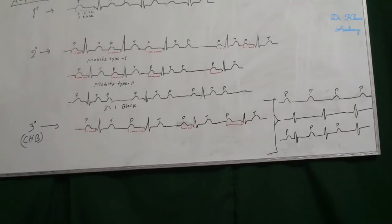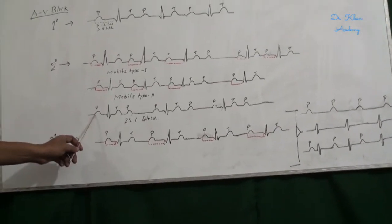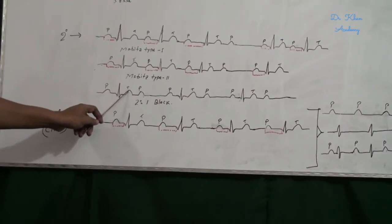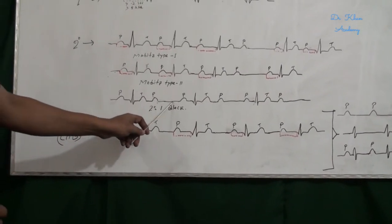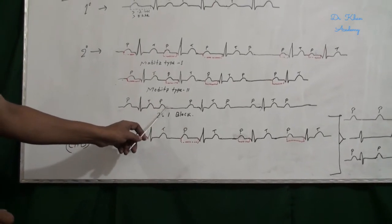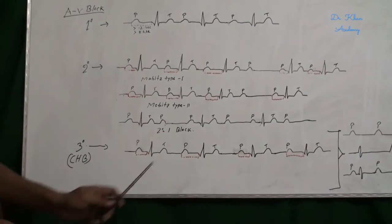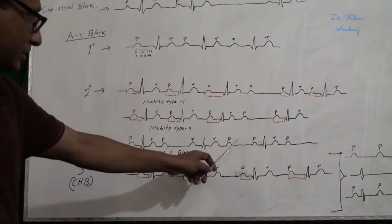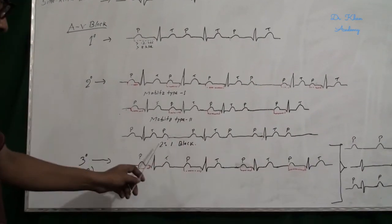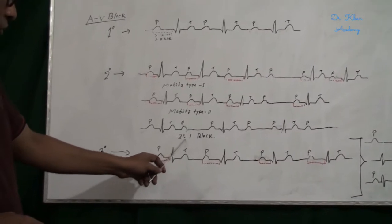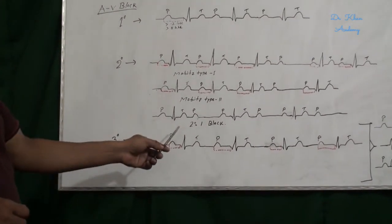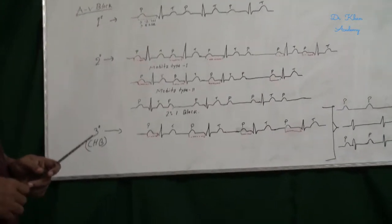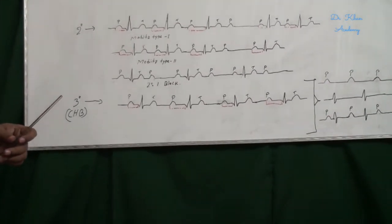In 2:1 block, one P wave is conducted to the ventricle — one P wave is followed by QRS complex — but another P wave is not conducted. Again one P is followed by QRS and another P is not followed by QRS. This is called 2:1 block. There may also be 3:1 block or 4:1 block.